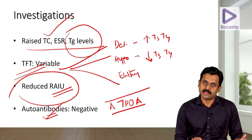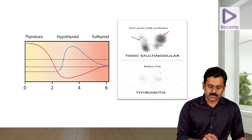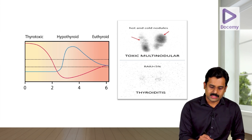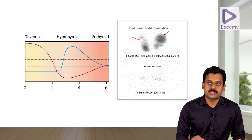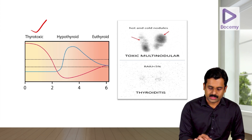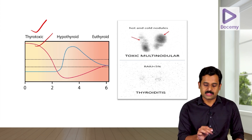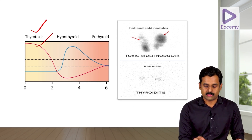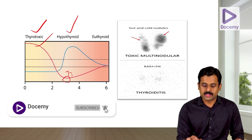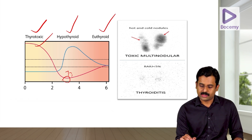To summarize the phases of de Quervain's thyroiditis: initially due to release of thyroid hormone there is a thyrotoxic phase with high T3 and T4, followed by a hypothyroid phase as hormones are depleted with low T3 and T4, and finally recovery to euthyroid. Radioactive iodine uptake is reduced throughout — the gland is not seen on scan.